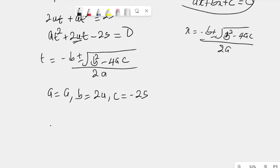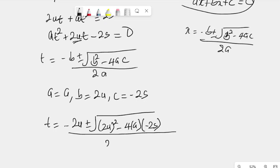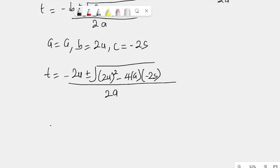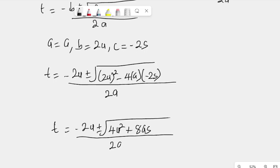So, when we substitute all of that into this equation here, T becomes minus 2U plus or minus root 2U squared minus 4 times A times C. C is minus 2S, and all over 2A. And this will give us T is equal to minus 2U plus or minus root 4U squared. Minus times minus 2S is plus, then 4 times A is 4A. 4A times 2S is 8AS, all over 2A.